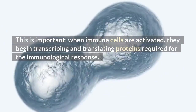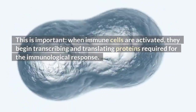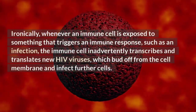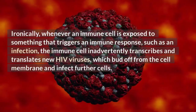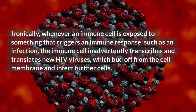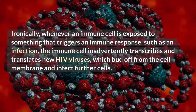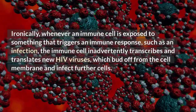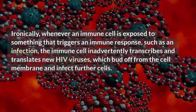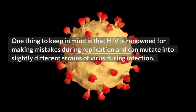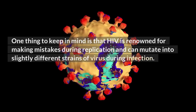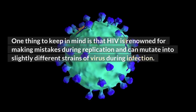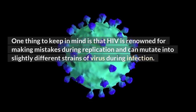How does HIV replicate in your body? When immune cells are activated, they begin transcribing and translating proteins required for the immunological response. Ironically, whenever an immune cell is exposed to something that triggers an immune response such as an infection, the immune cell inadvertently transcribes and translates new HIV viruses, which bud off from the cell membrane and infect further cells.